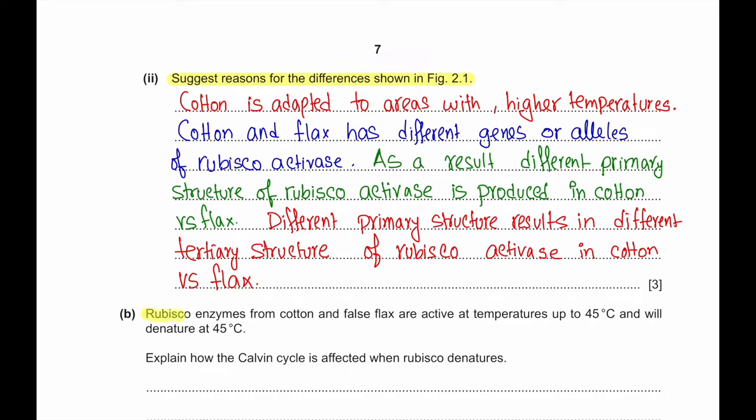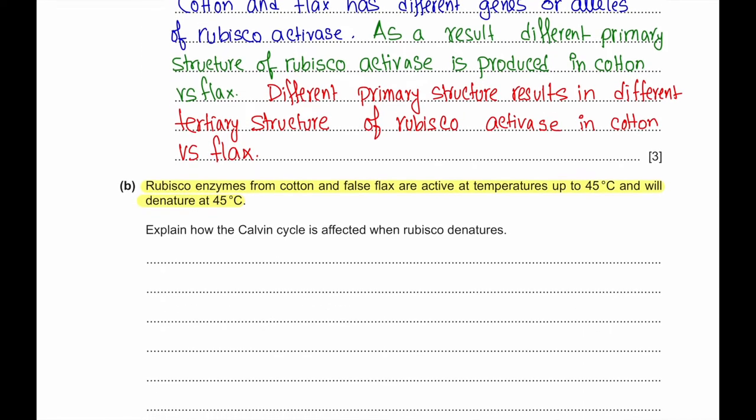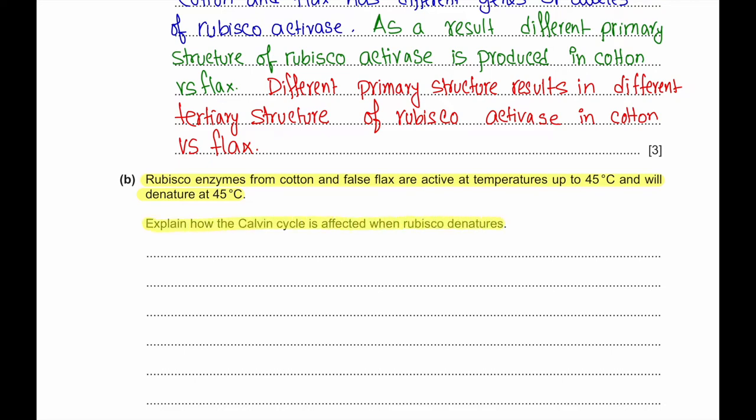Part B. Rubisco enzymes from cotton and false flax are active at temperatures up to 45 degrees Celsius and will denature at 45 degrees Celsius. Explain how the Calvin cycle is affected when Rubisco denatures. When Rubisco denatures, no carbon dioxide can be fixed because Rubisco is the main enzyme that fixes carbon dioxide. As a result, glycerate phosphate is not produced and it is not converted into triose phosphate. No RuBP is regenerated in the process and no glucose is made as a result.